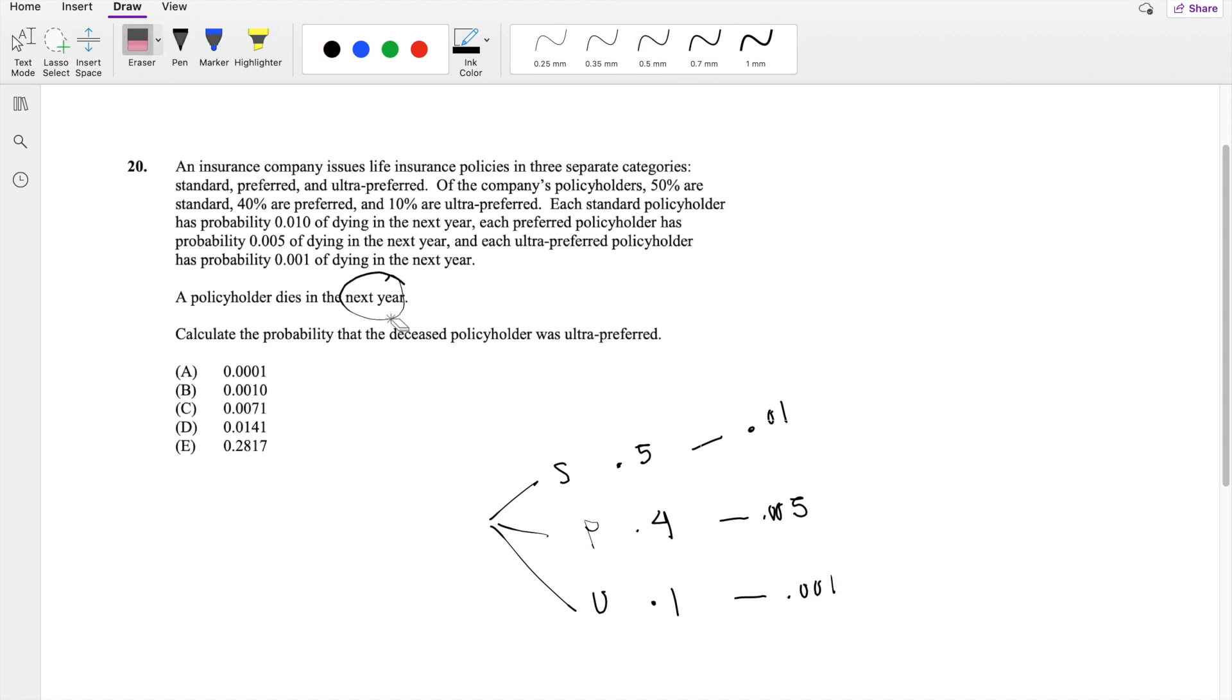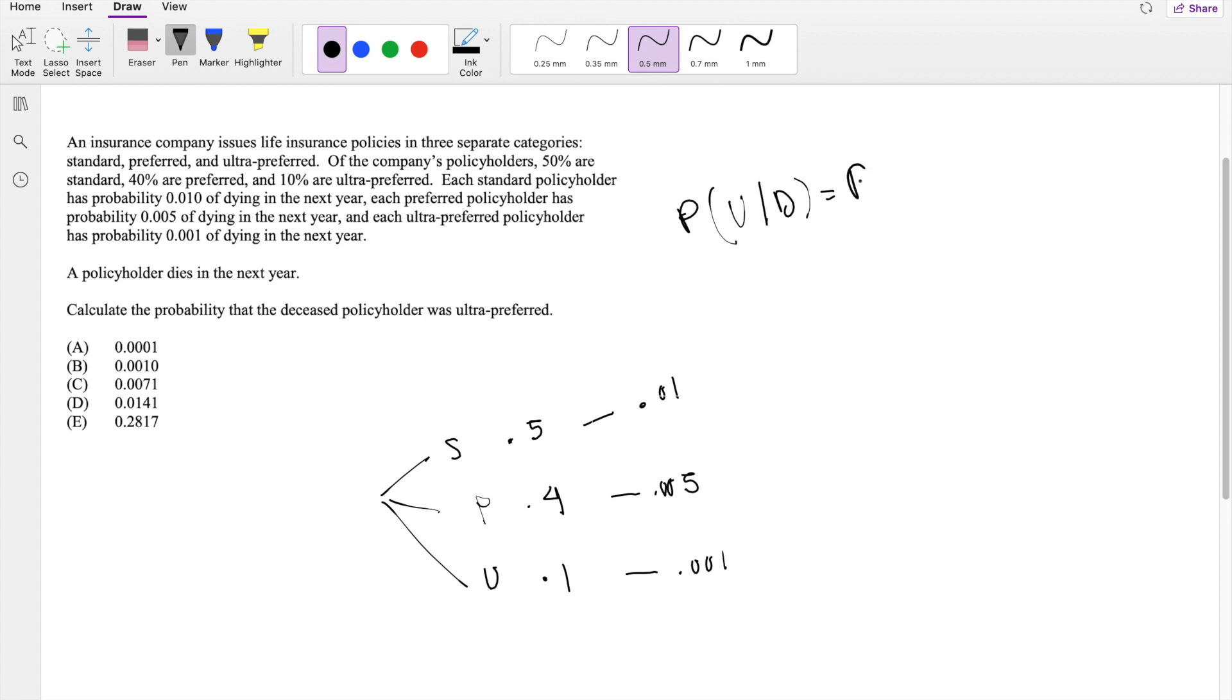Policyholder dies next year. Calculate the probability that the deceased is ultra-preferred. So basically, this question is, what is the probability of ultra-preferred given that they died last year? With the conditional probability formula, we can break this down into probability of ultra-preferred and dead divided by the probability of dead.